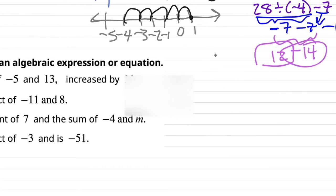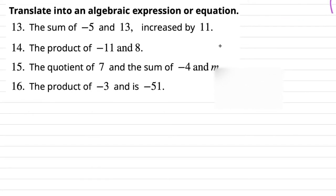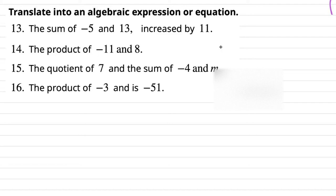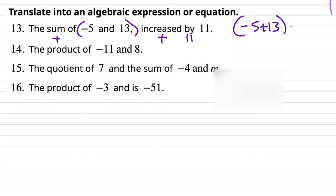Number 13: translate into an algebraic expression. "The sum" means addition — "of 5 and 13, increased by" — another addition — "11." So it's going to be negative 5 plus 13, and that sum increased by 11.